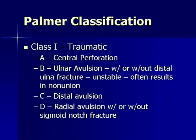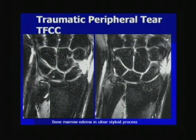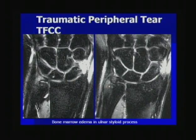There is a Palmer classification for TFCC tears. Type A is a central perforation; types B, C, and D are based on avulsions at either the ulnar site, the distal lunate or triquetral attachment sites, or a radial avulsion at the sigmoid notch. Here is an example of a traumatic peripheral tear with increased signal intensity within the peripheral aspect of the TFCC, disrupted attachment sites on both the ulnar styloid and fovea, and associated bone marrow edema in the ulnar styloid process.